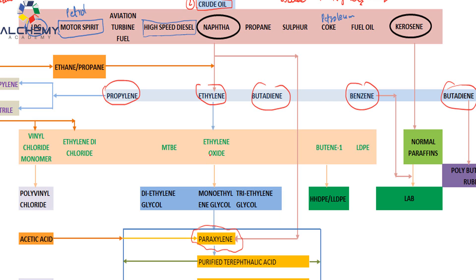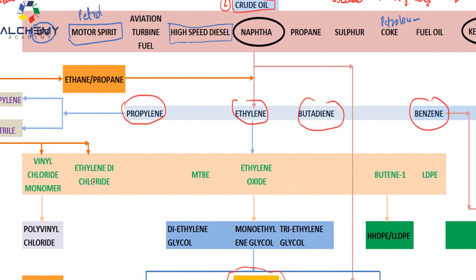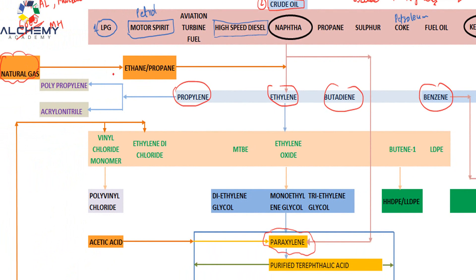From ethylene we derive ethylene oxide, MTBE, ethylene dichloride, vinyl chloride monomer, butene-1, and LDPE. These are some products we get from ethylene. Ethylene is obtained from naphtha, or from ethane and propane which come from natural gas — so there are two sources of getting ethylene.